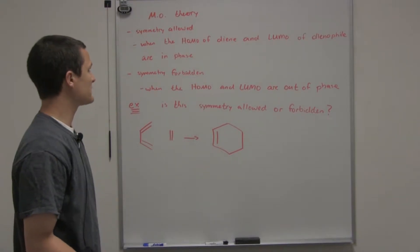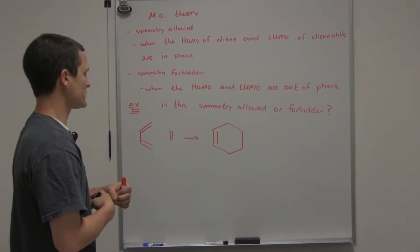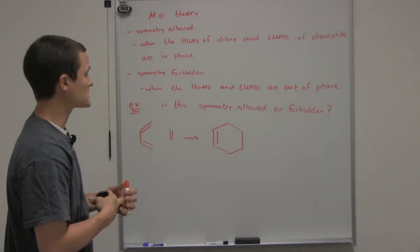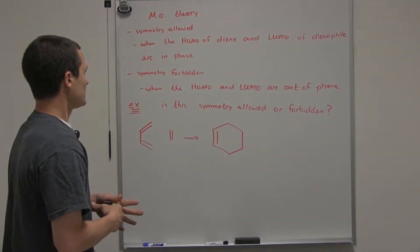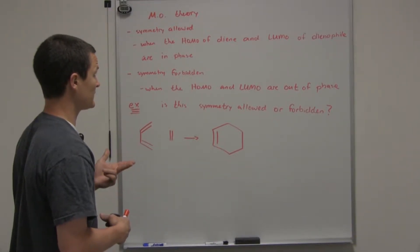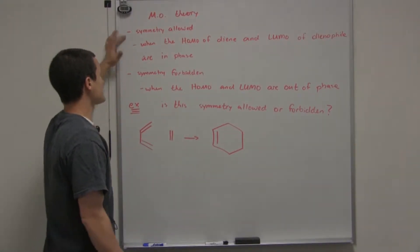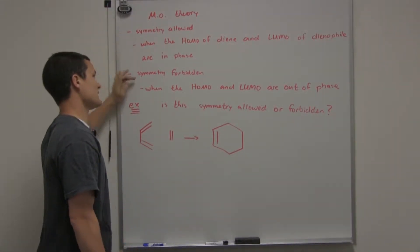Okay, we're going to discuss molecular orbital theory and how it applies to the Diels-Alder reaction. We have two things that are fairly simple to keep in mind, and they're pretty much opposites of each other. You have to ask yourself, is it symmetry allowed, and if it's not, then it's symmetry forbidden.